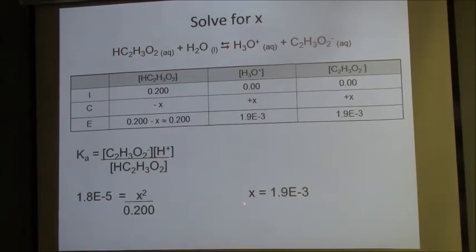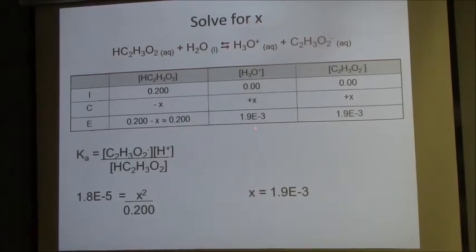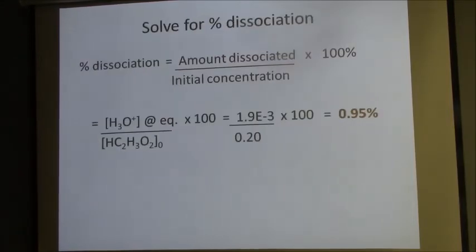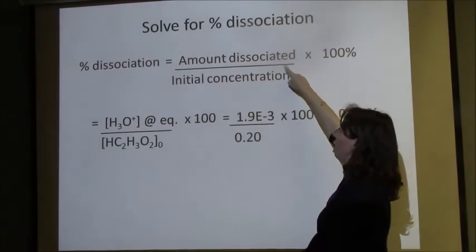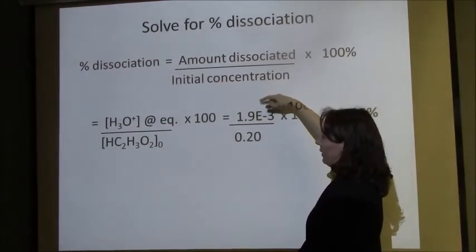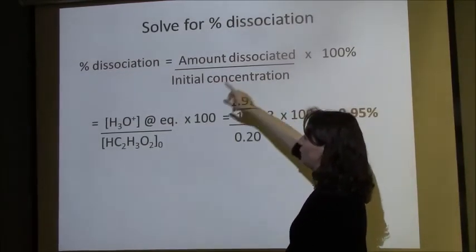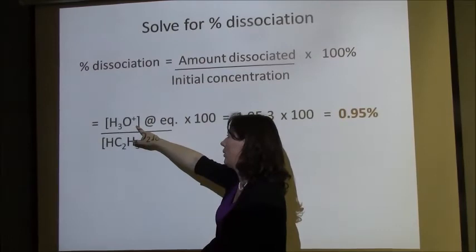We do our arithmetic and come out with x = 1.9 × 10⁻³. We plug that in, and then the only new part here is the percent dissociation formula. Percent dissociation is just how much it dissociated over how much you began with.